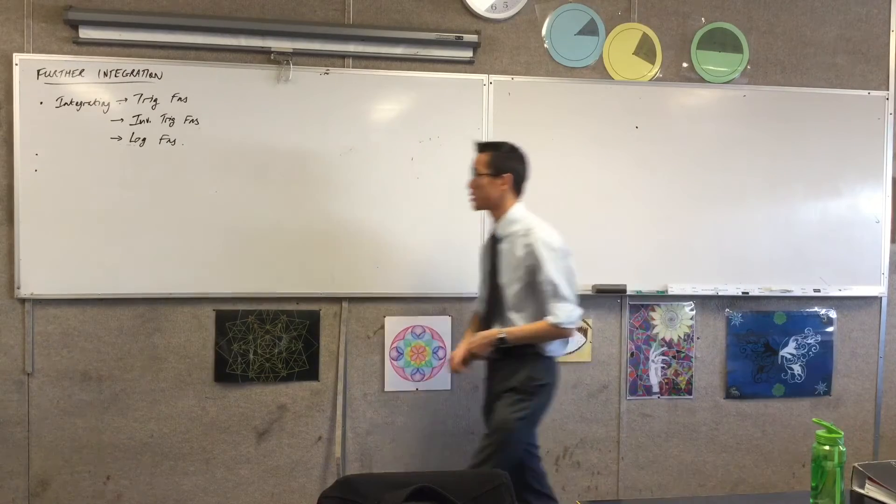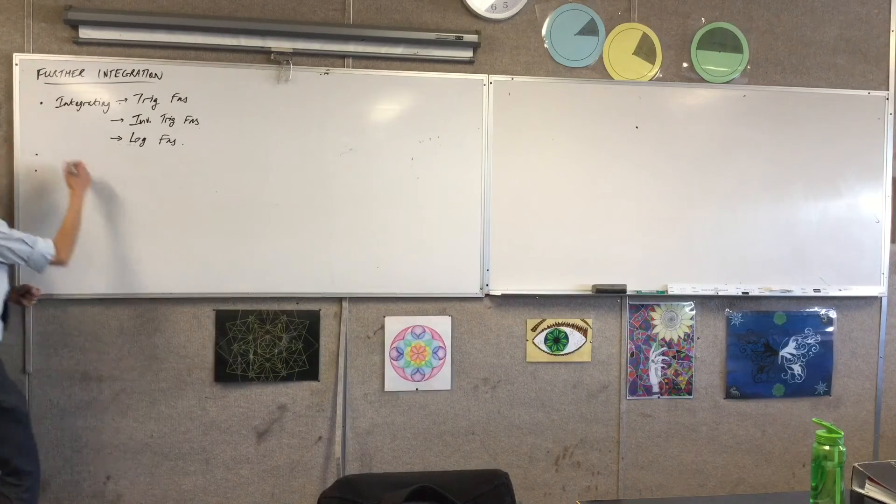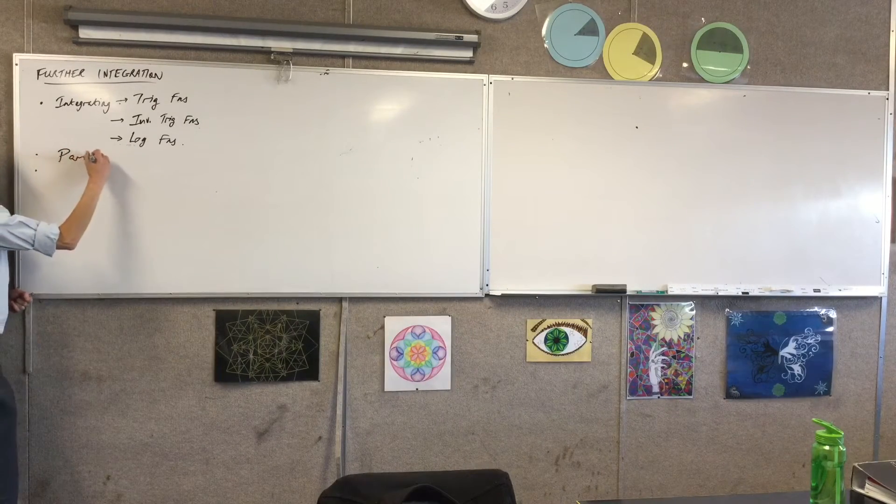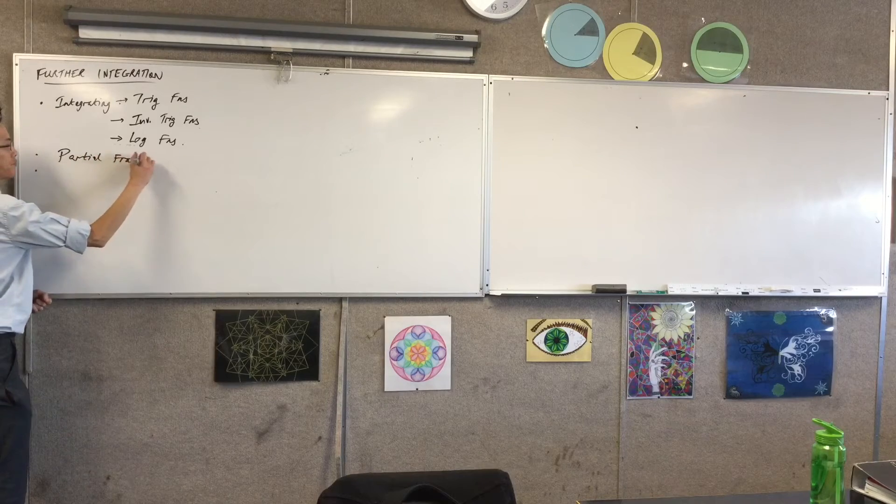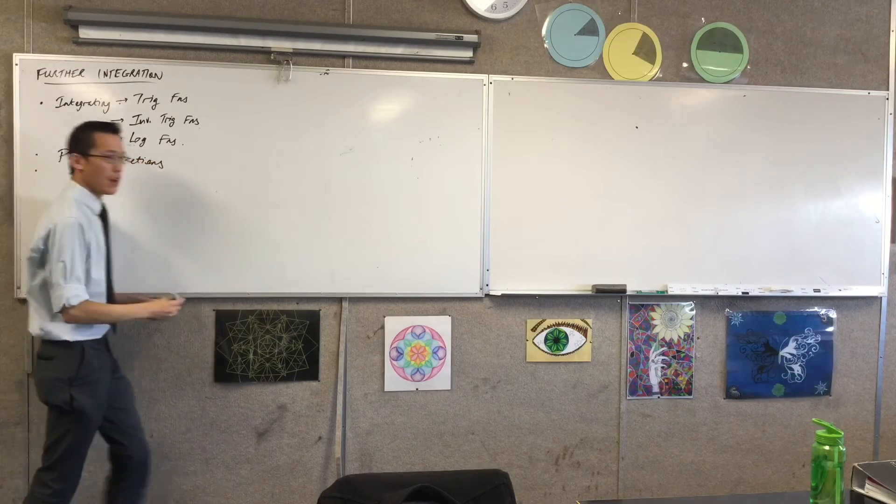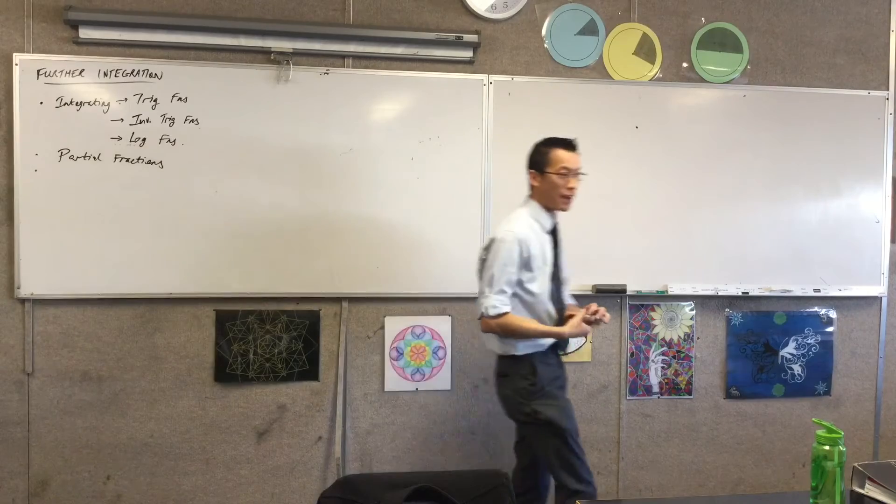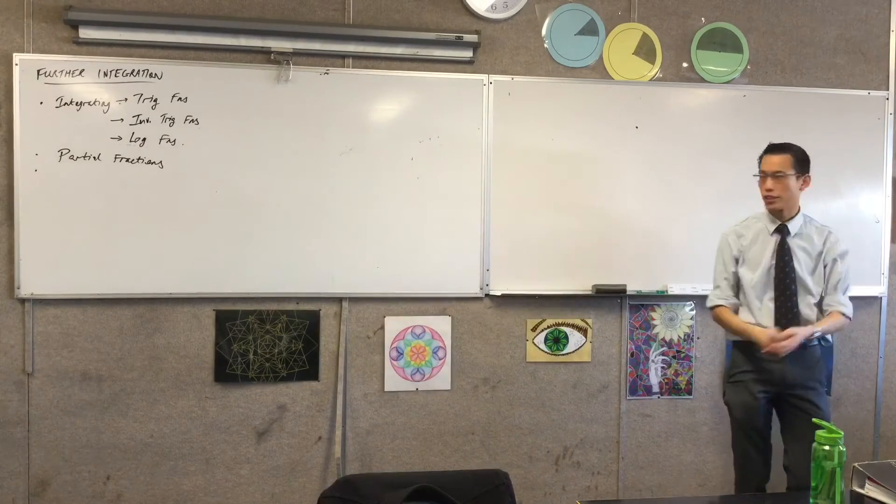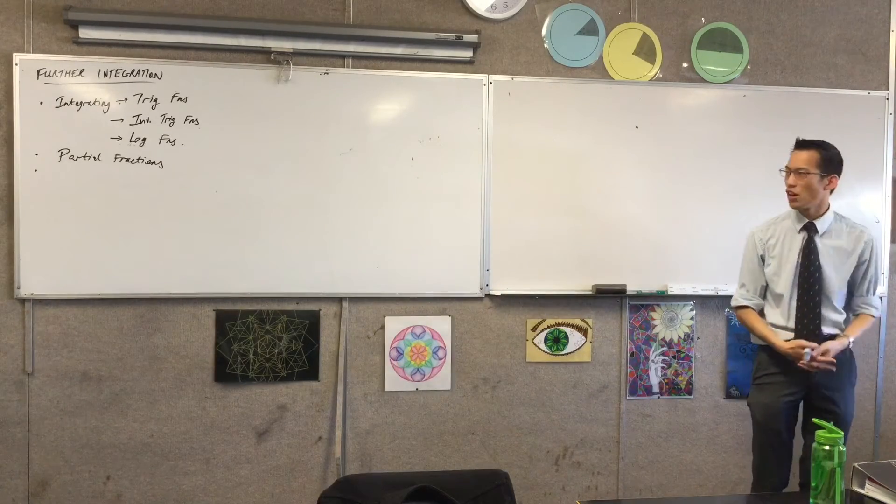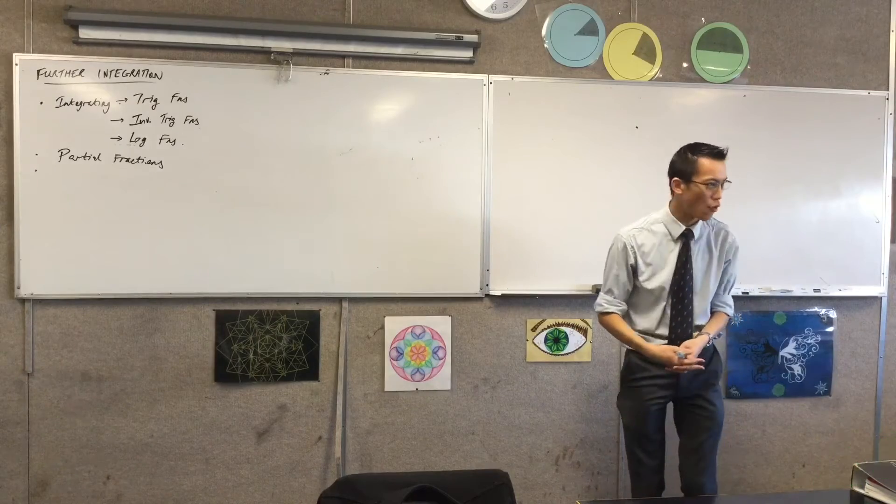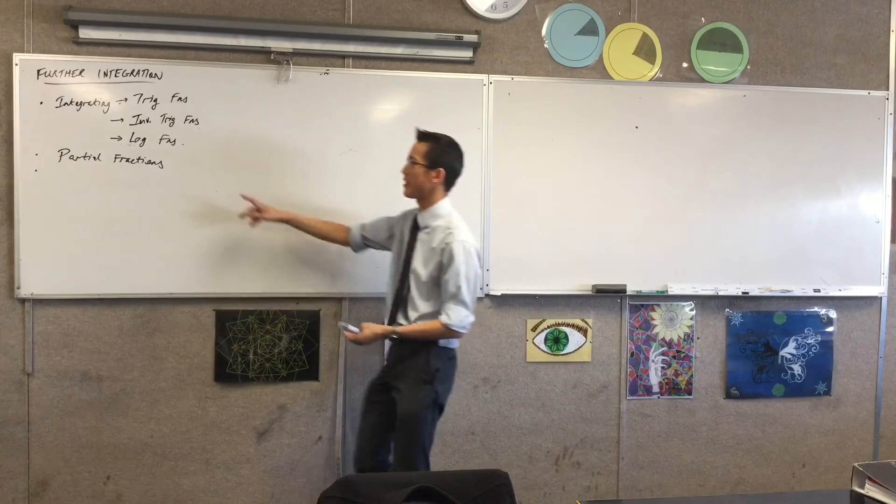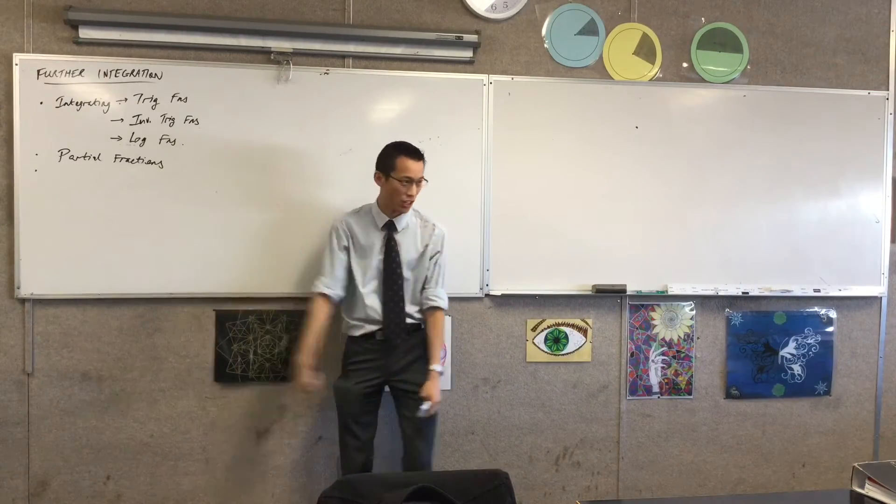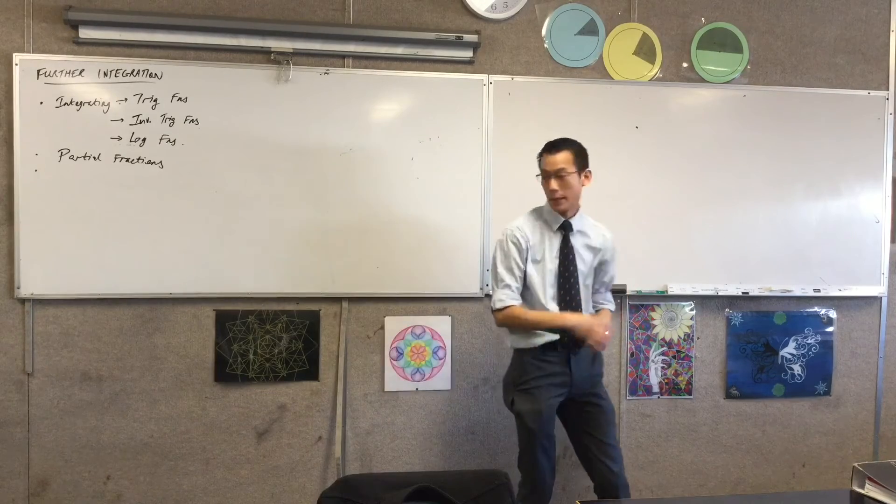So there's the first three points. The second point is we're going to borrow something we developed under polynomials, which is to say, okay, if you have something which is a rational function, often when it's given to you, it's not in like a nice f dash on f form, or it's not going to lean nicely by itself into an inverse trig function. We've got to muck around with it a little bit.